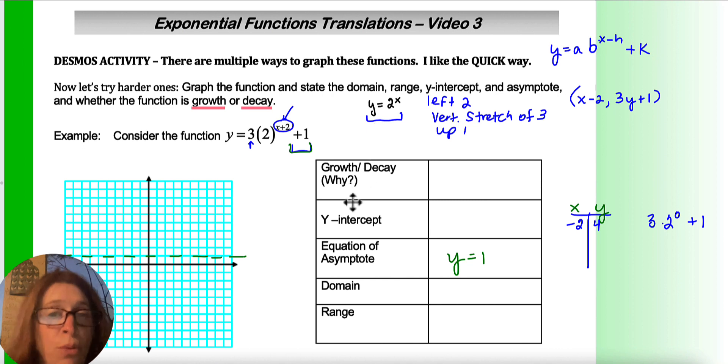I do want to see maybe a number like negative 1. What happens when I get negative 1? If I put in negative 1, I'm going to get negative 1 plus 2, which is 1. So that's going to give me 3 times 2 to the 1 plus 1. So 6 plus 1, which is 7.